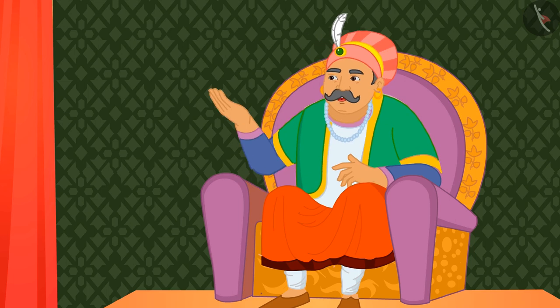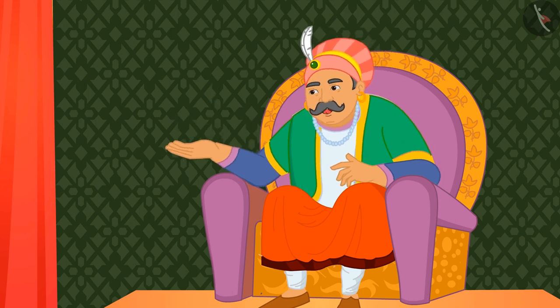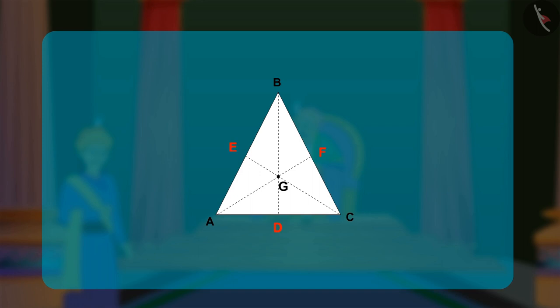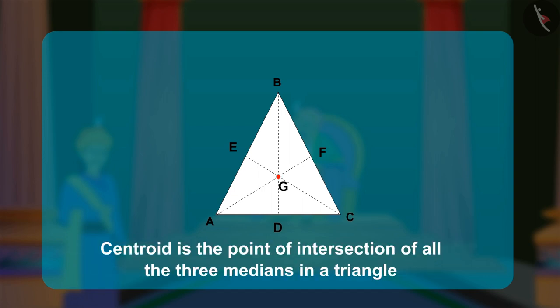What is the common point of intersection of these lines called, asked Akbar. The point at which the three medians of the triangle intersect is known as the centroid of a triangle. It is also defined as the point of intersection of all the three medians.